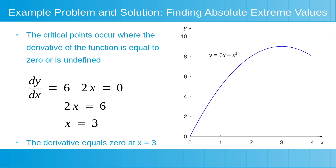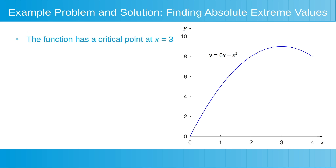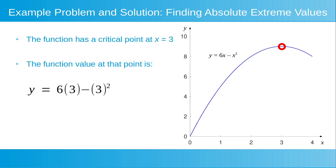The derivative equals zero at x is equal to 3. This means that the function has a critical point at x is equal to 3. We now solve for the function's value at that point by substituting x is equal to 3 into our function equation. The function value is y is equal to 6 multiplied by 3 minus 3 squared, which is equal to 18 minus 9, which is equal to 9. We'll compare this value to the function's value at the endpoints.